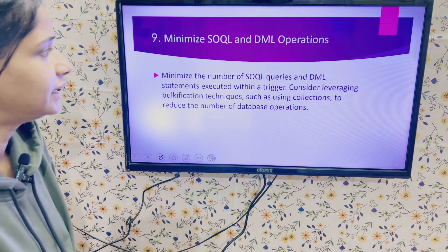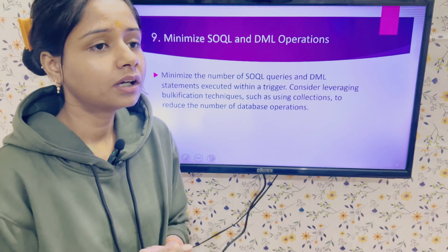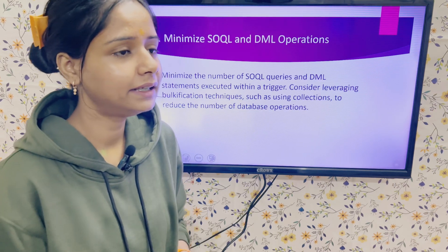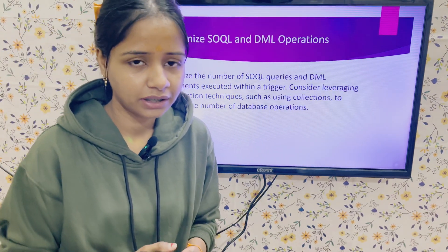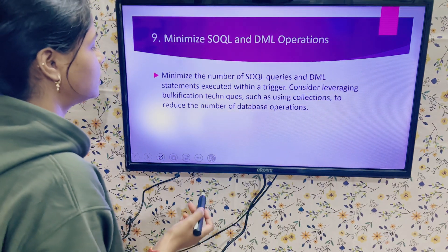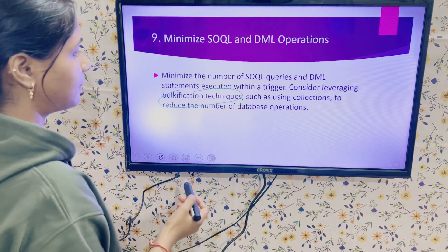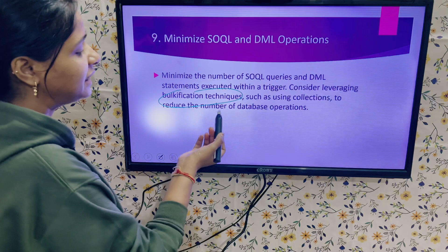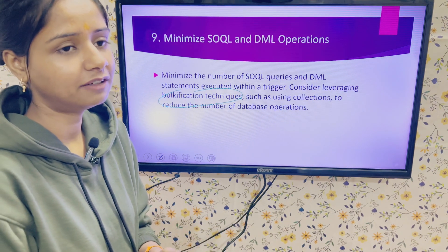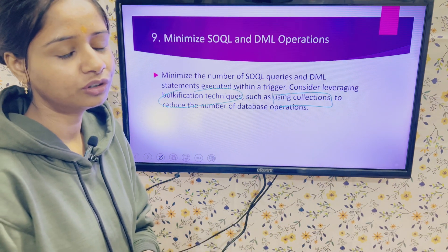The next point is to minimize SOQL and DML operations. There is a specific number of DMLs and SOQLs you can use in Apex triggers. Keep in mind that as records and load on your logic increase, it should not hit governor limit exceeded errors. Try to write your code to use a minimum number of SOQL and DML operations. Bulkification is a key technique here — use collections such as Map, List, and Set to reduce the number of database operations. Before moving to triggers, build a good foundation with these collections.